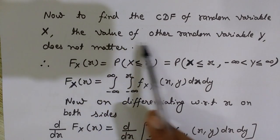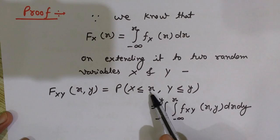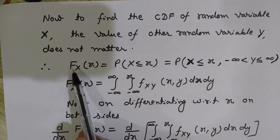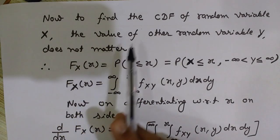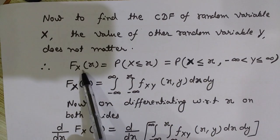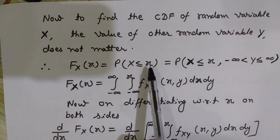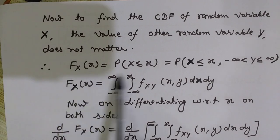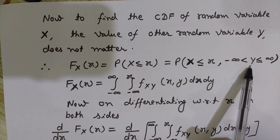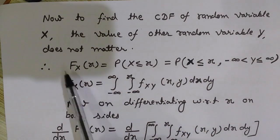Now to find the cumulative distribution function of the random variable x, the value of the other random variable y does not matter. We have seen that F(x, y) equals the probability that X is less than x and Y is less than y, but here the value of y does not matter. So the CDF of x can be extended — since it does not depend on y, we take the infinite range of the other random variable, which will not affect it.